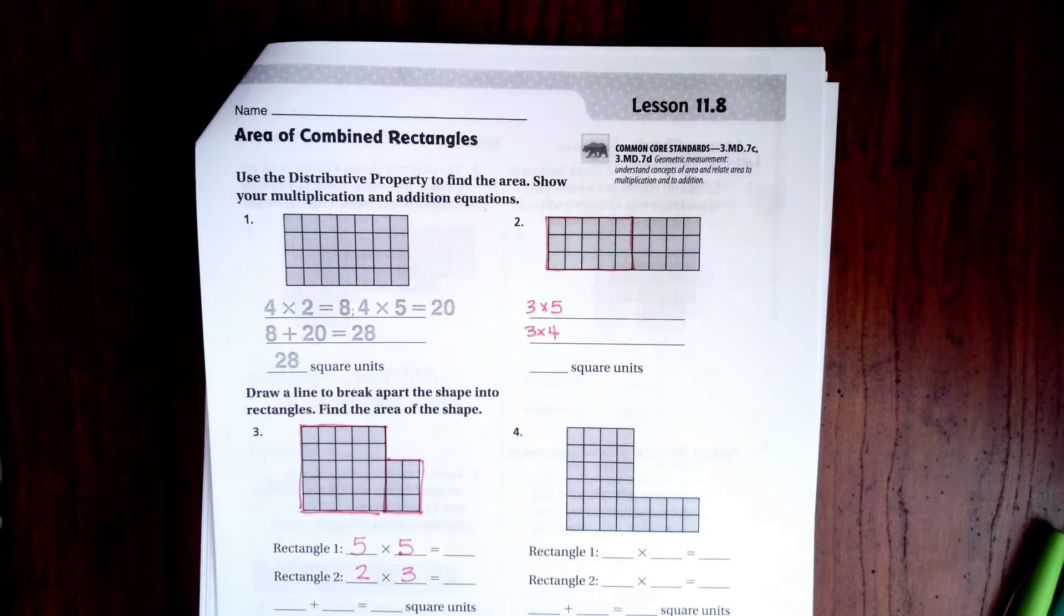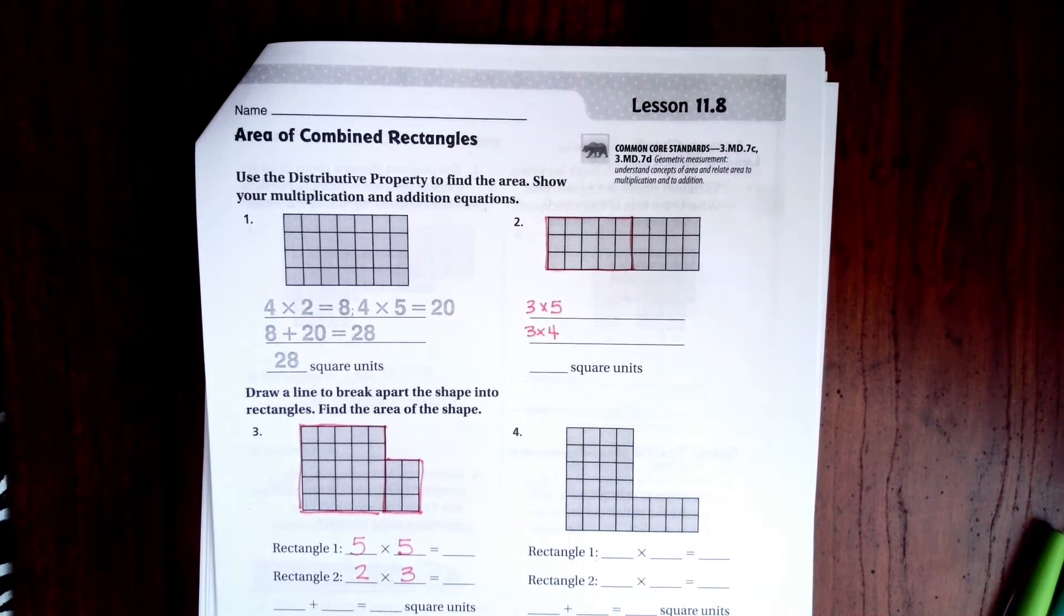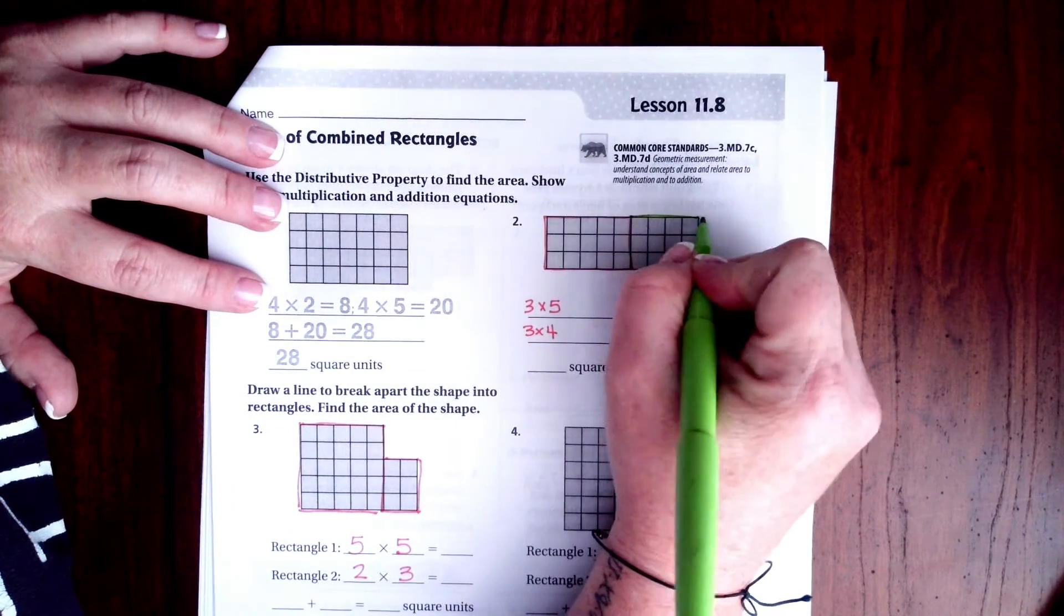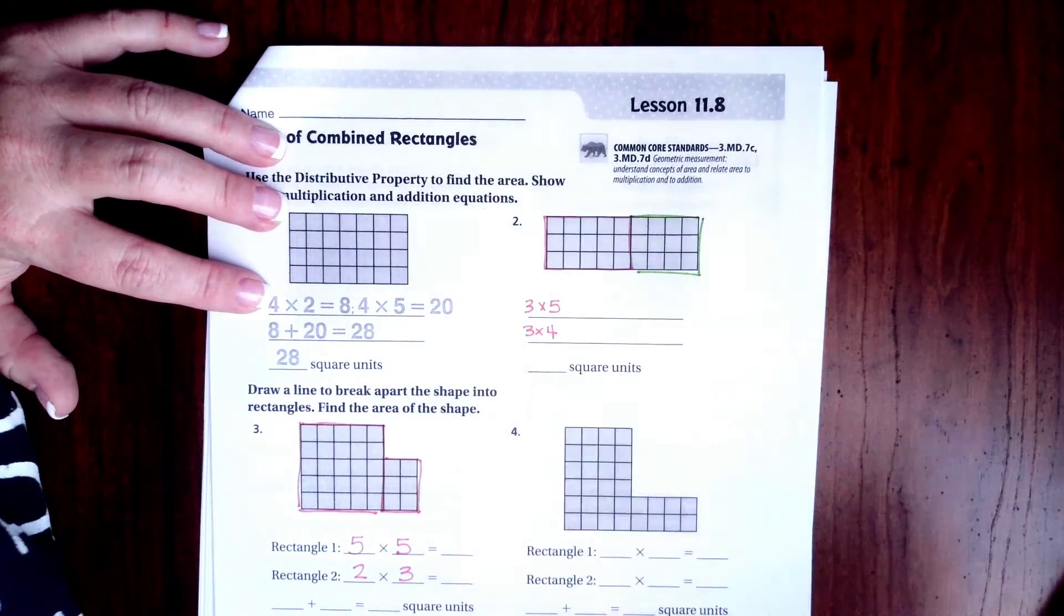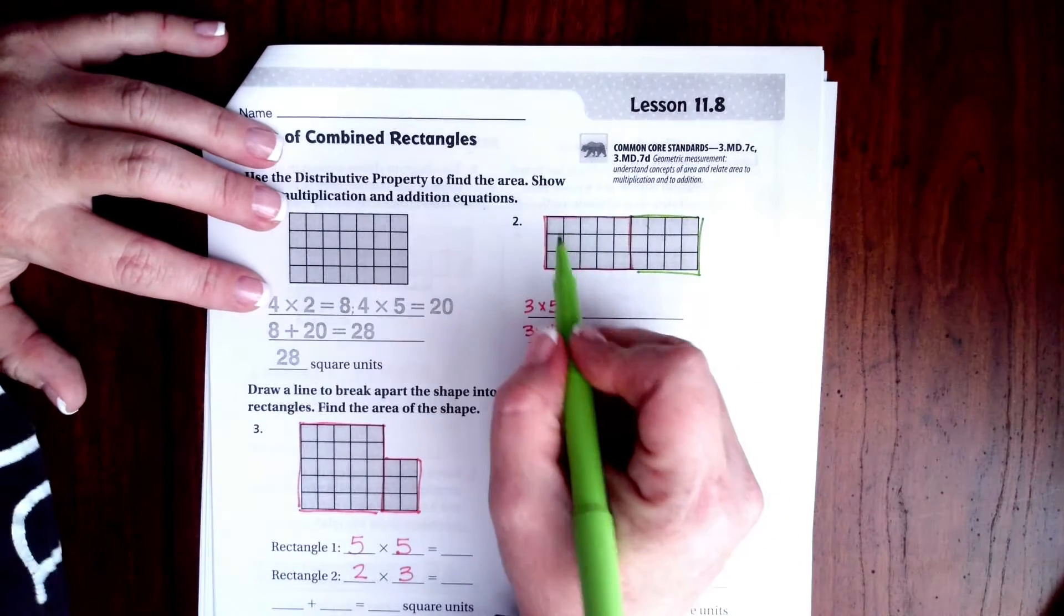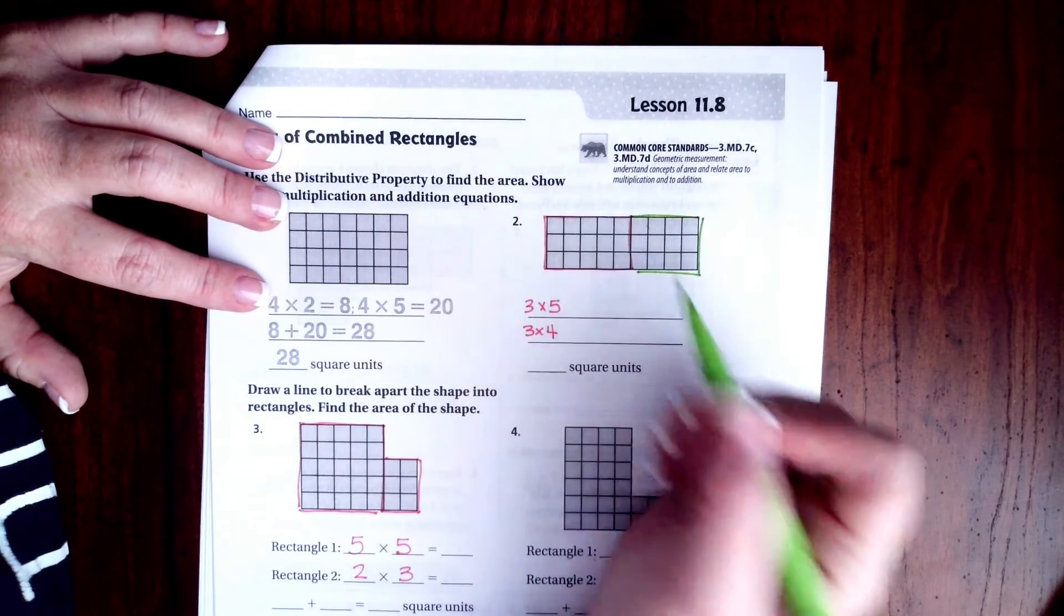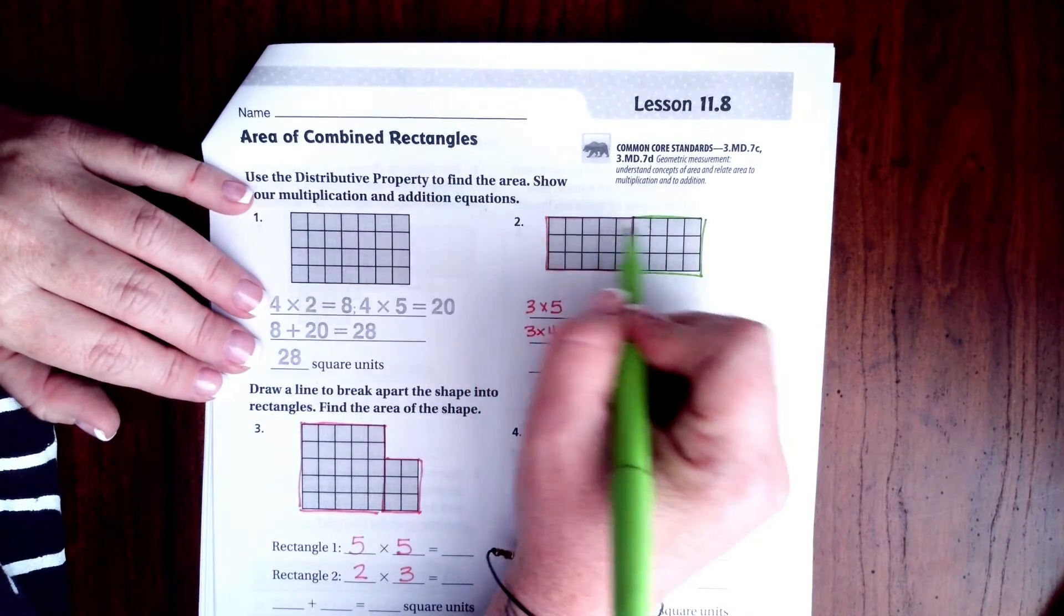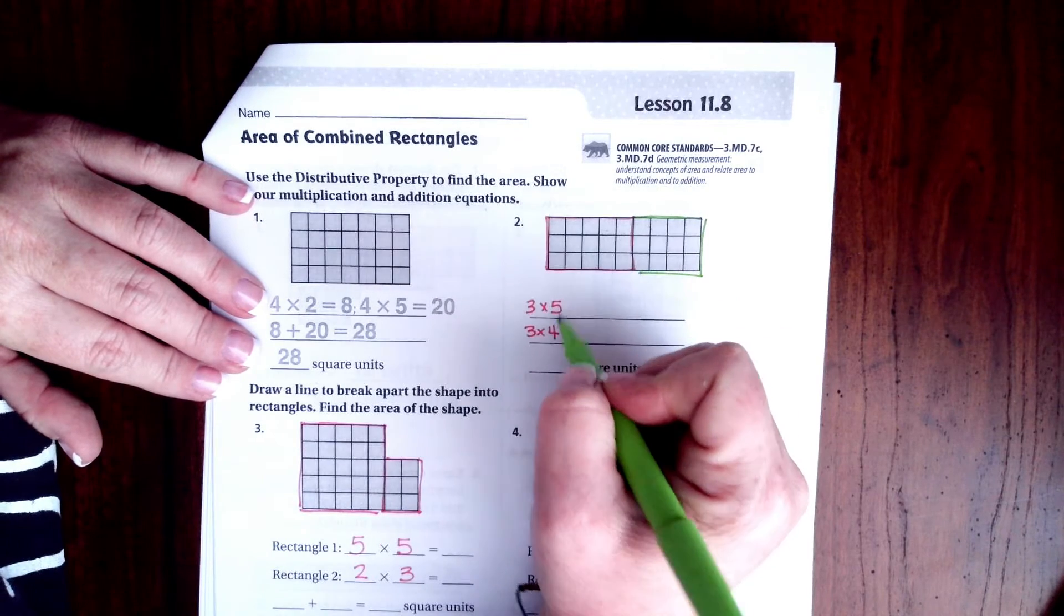We are using the distributive property to find our area now. So all we're doing is we're splitting them up into numbers that are easy to multiply. So what I did is each one of those is 3. I can't change that going down, but I can break up this 9 into 5 and 4.